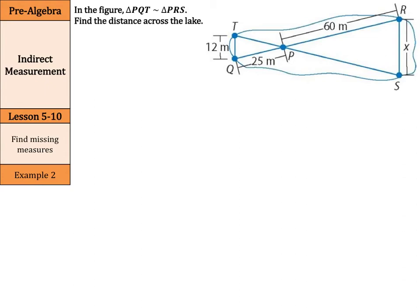In the figure, triangle PQT is similar, the little line here means similar, to triangle PRS. Find the distance across the lake, which here is side RS. You can tell it's labeled as the x. Now, that missing side is RS.